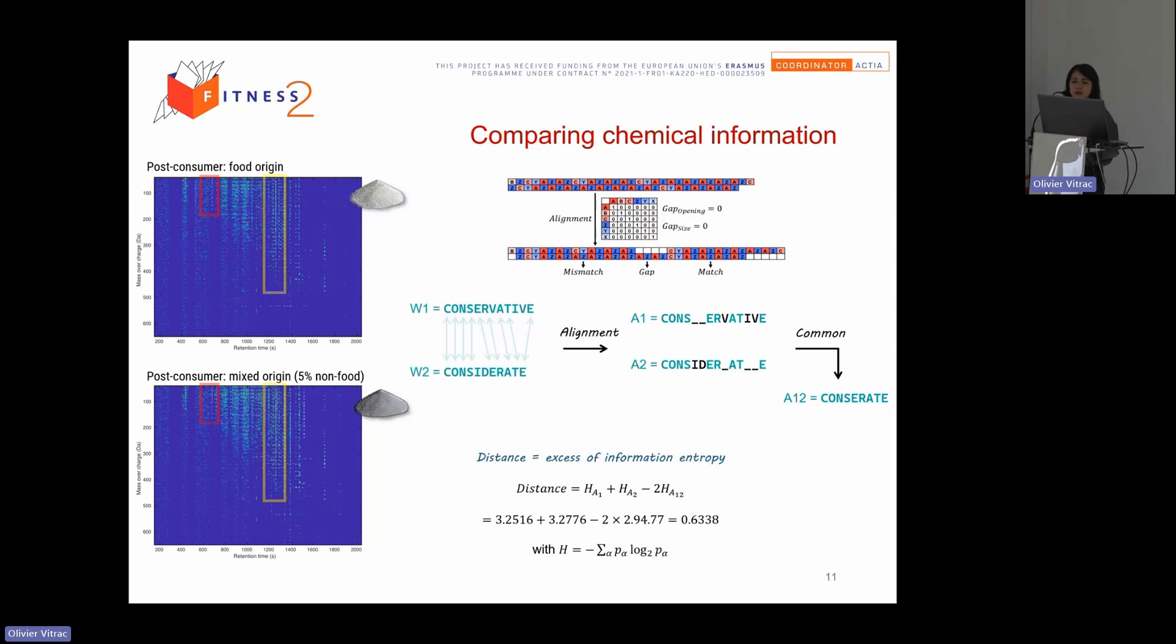The second step consists of comparing chemical information. So here, from chromatogram, we have the sequence of letters because we transform all the peaks to the letters. So here we have six letters. For example, here, I take one example for conservative and considerate. The objective is to obtain the common sequence, like I call it mutual information.